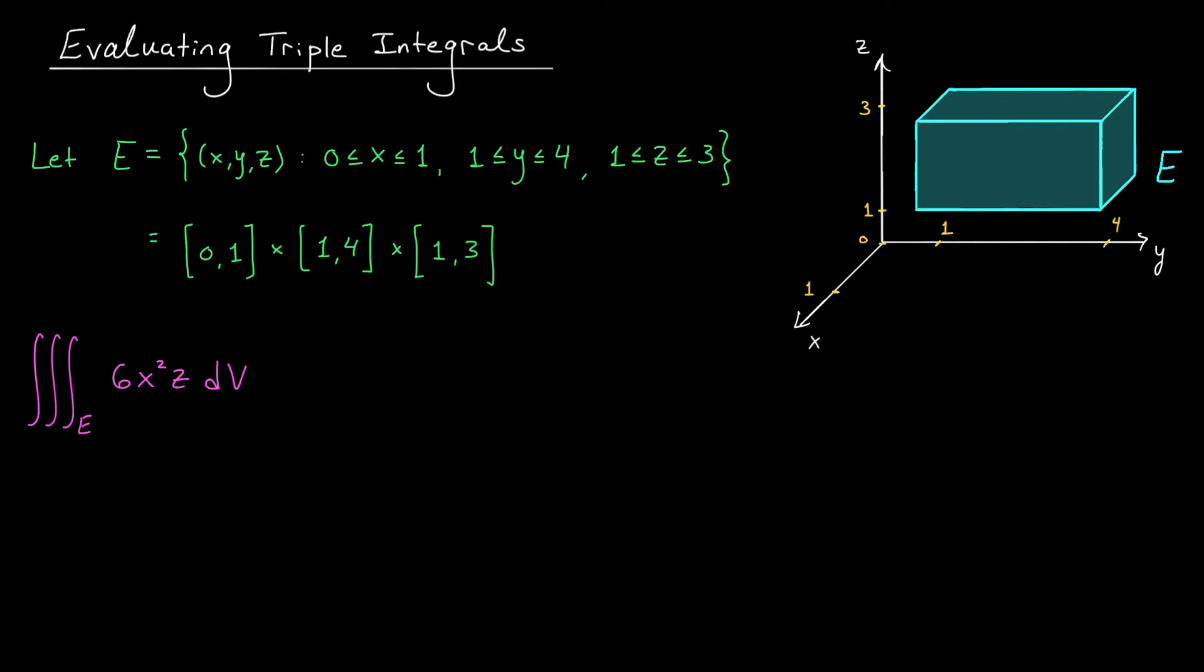So, for example, if we're trying to integrate a function over this rectangular box E, where x is bounded between 0 and 1, y is bounded between 1 and 4, and z is bounded between 1 and 3, sometimes denoted like this, we could write the integral in various orders: dx dy dz, dy dz dx, and so on. I'm just going to arbitrarily pick the order dz dy dx.